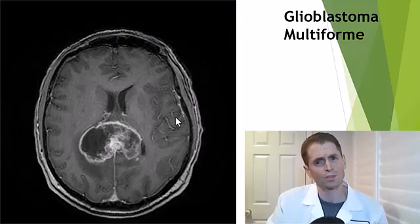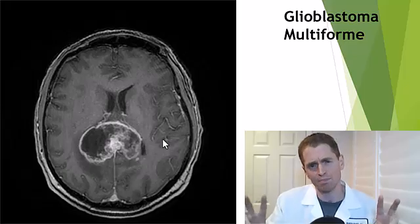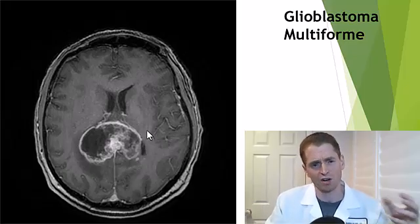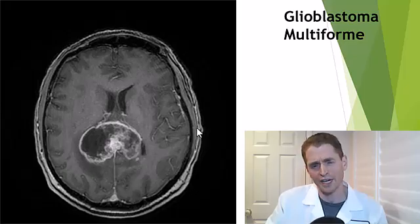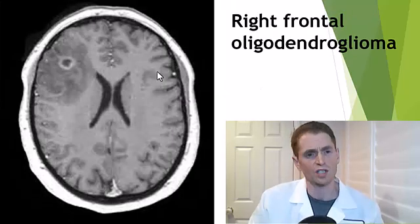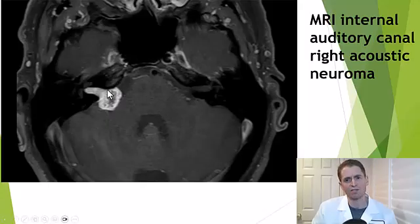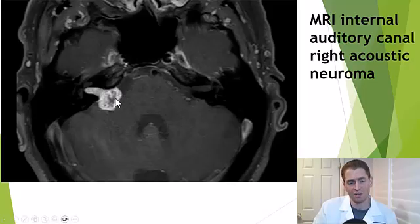This is a glioblastoma multiforme. It can invade the posterior aspect of the corpus callosum and extend to the other side of the brain, causing a butterfly effect — this could be called a butterfly tumor. It's often associated with a bad prognosis, though treatment is getting better and there are rare cases of long-term survival. Here's a right frontal oligodendroglioma with a smaller tumor and a larger area of edema or swelling. And this is a right acoustic schwannoma, a generally benign tumor that can cause hearing loss on the same side if it becomes enlarged.